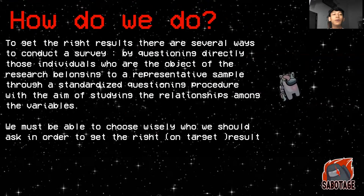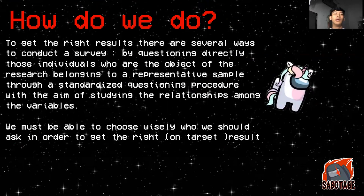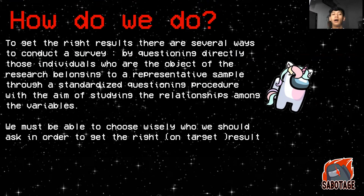So how do we do it? To get the right results, there are several ways to conduct a survey. We can do it by questioning directly those individuals who are the object of the research, belonging to a representative sample through a standardized questioning procedure, with the aim of studying the relationship among the variables.